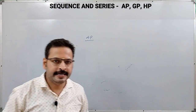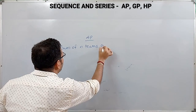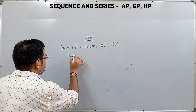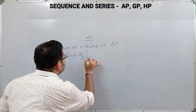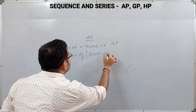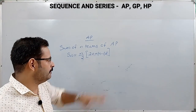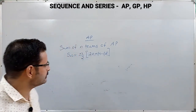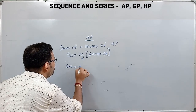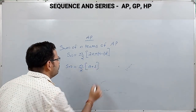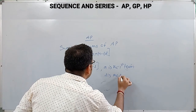Now let us consider the sum of n terms of AP, denoted Sn. The formula is Sn = n/2 × (2a + (n − 1)d). We can also use another formula when the first term and last term are given: Sn = n/2 × (a + l), where a is the first term and l is the last term.